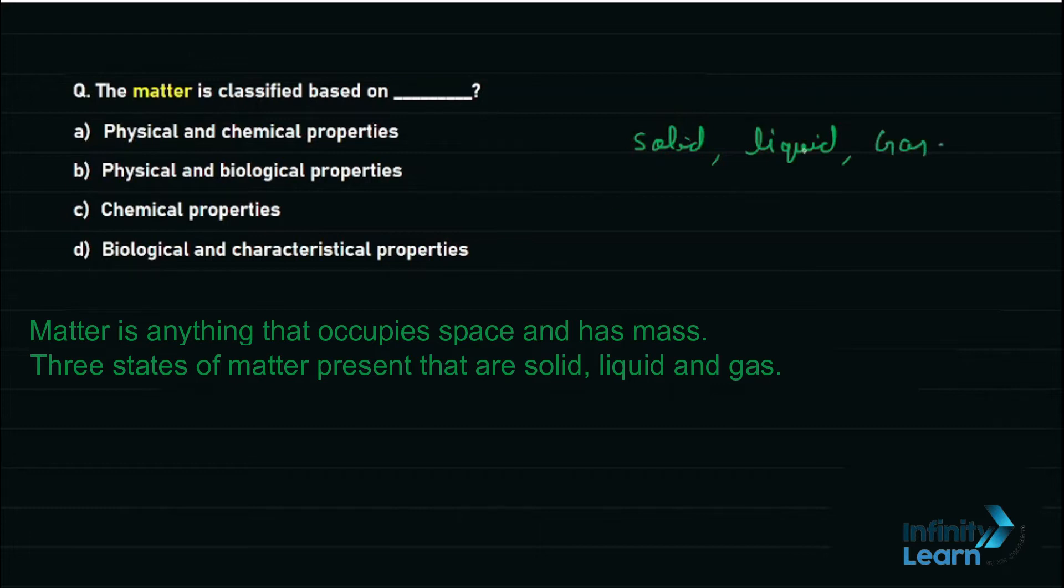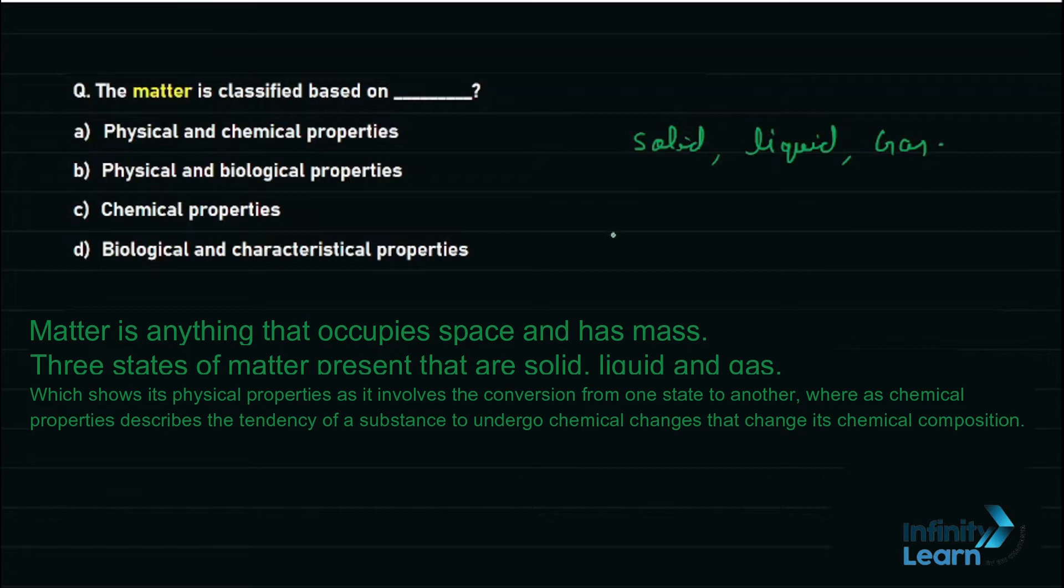This shows its physical properties as it involves the conversion of substances from one state to another state, whereas the chemical properties describe the tendency of a substance to undergo chemical changes that change its chemical composition.